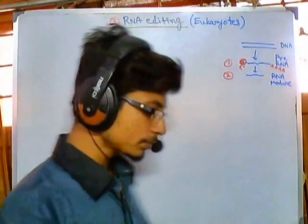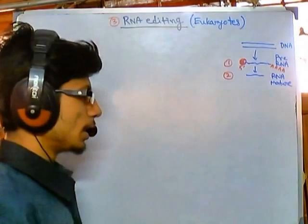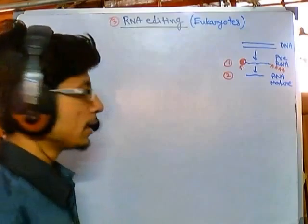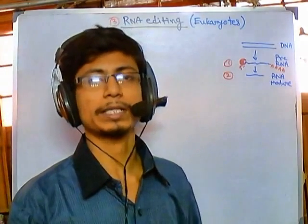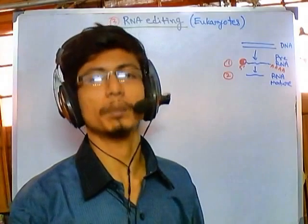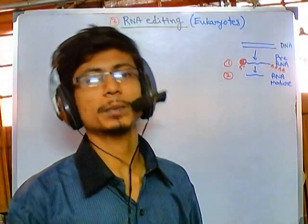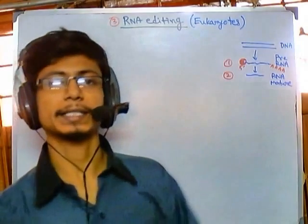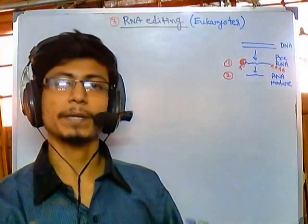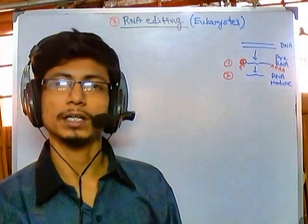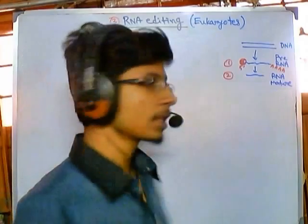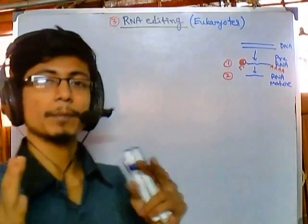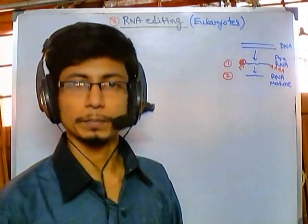We will be taking an example — the modification of apolipoprotein B. Apolipoprotein B is a very important protein. It functions in many different ways inside our body. It can function as a transporter of cholesterol in blood, and it can help in the absorption of lipid in our intestine.